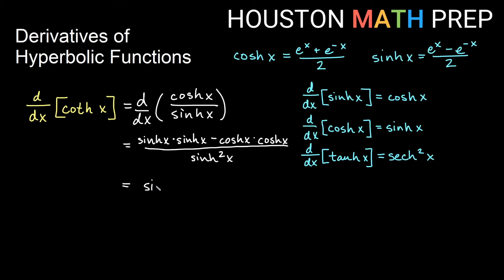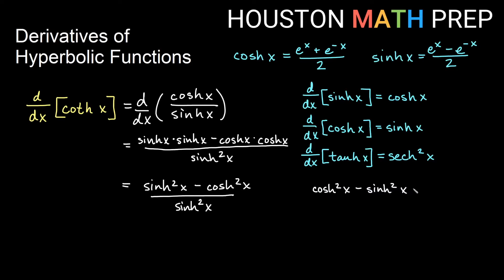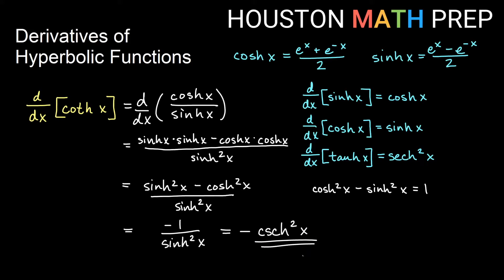In this one I get something a little different — sinh squared x minus cosh squared x on top over sinh squared x. If you remember from the derivative of tangent, cosh squared x minus sinh squared x equals 1. Notice here we have the same terms but with opposite signs, so sinh squared x minus cosh squared x equals negative 1. So we get negative 1 over sinh squared x. This is like saying the negative reciprocal of sinh is hyperbolic cosecant, so this is negative hyperbolic cosecant squared of x — similar to the circular function.